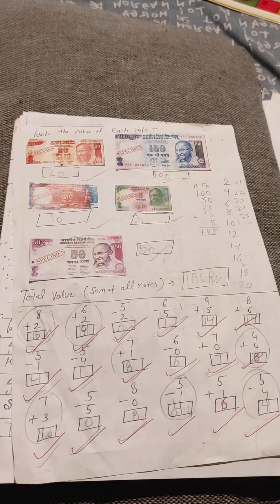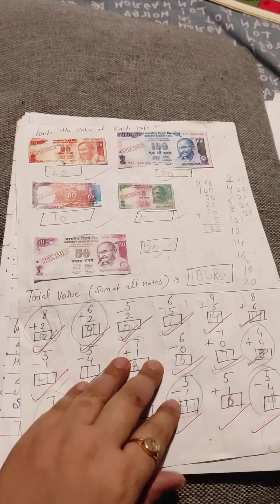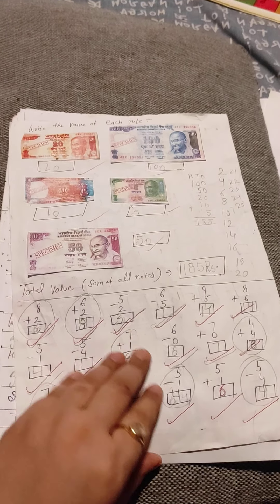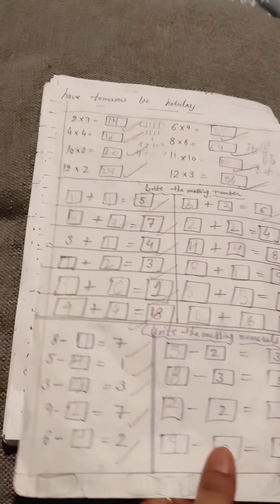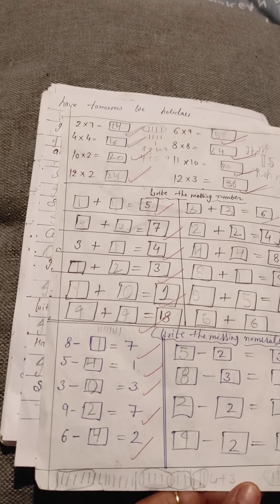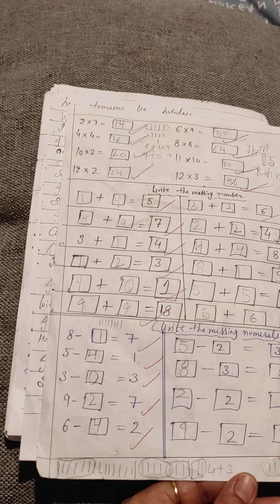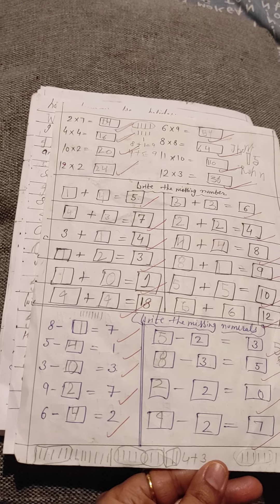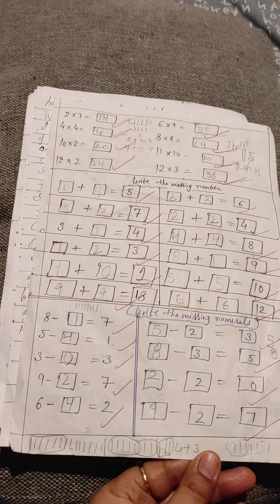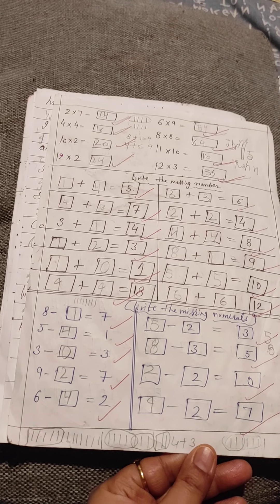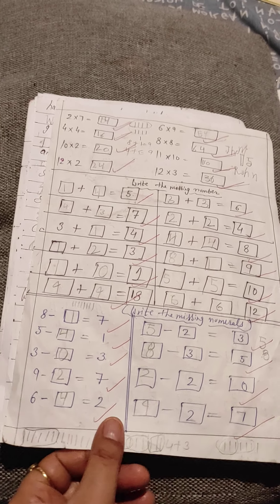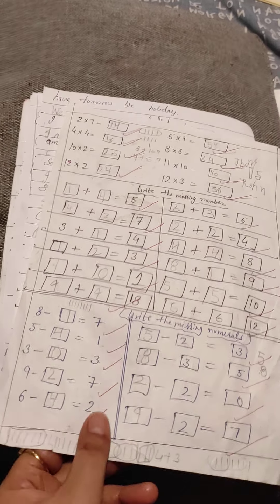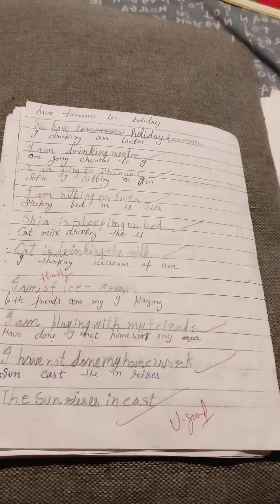The worksheet covers the currency concept, addition, subtraction — like 5 minus 2 — Indian currency, and multiply 2 into 7. There are also exercises to write the missing number and write the missing numerals, and again subtraction like 5 minus 2.